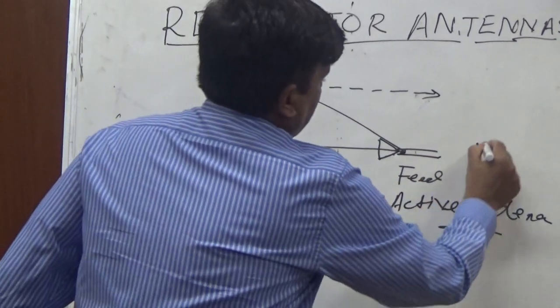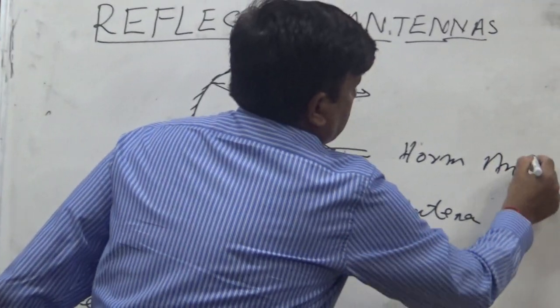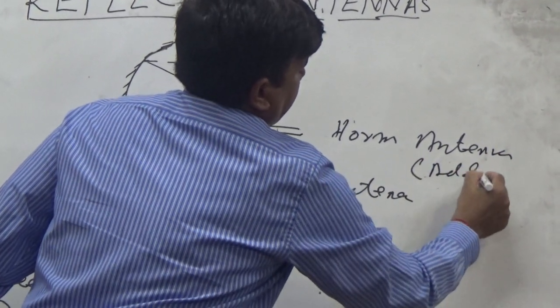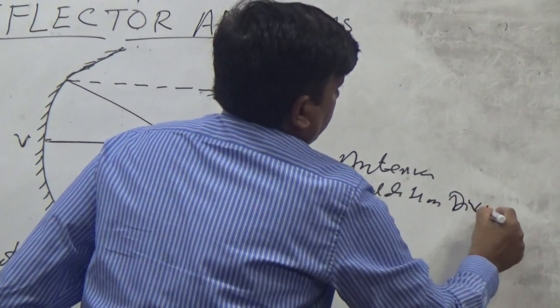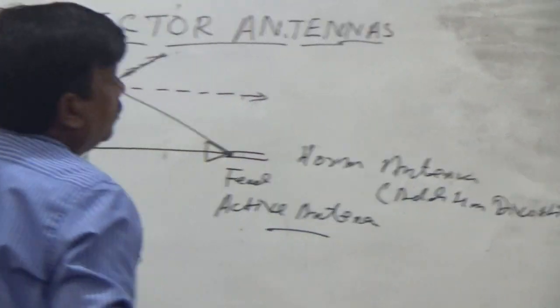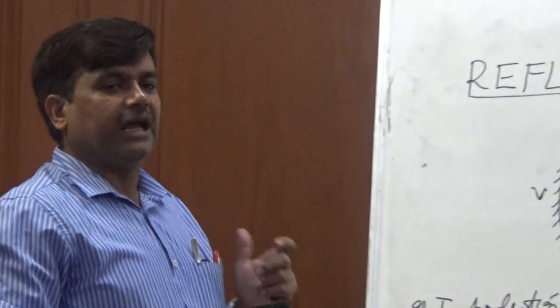Because horn antenna have additional directivity and directivity improvement. So it means that we are using feed itself which is high directivity.